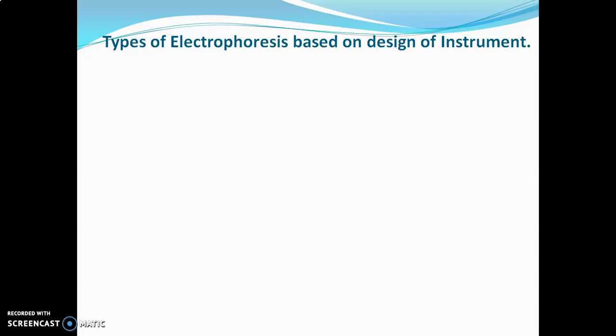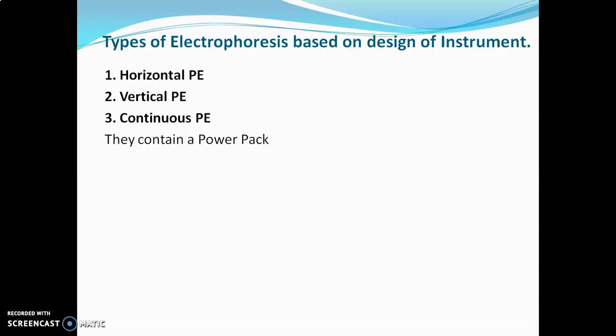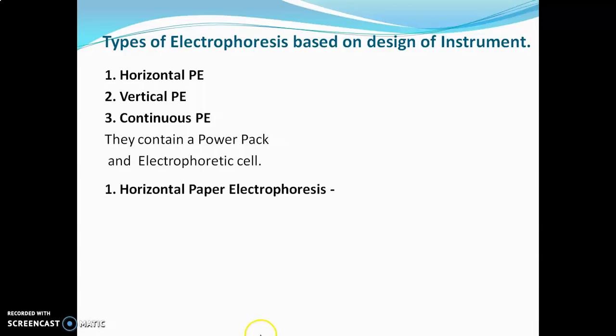Now we will look at types of electrophoresis based on the design of the instrument. There are three types: horizontal paper electrophoresis, vertical paper electrophoresis, and continuous paper electrophoresis. In all three, the instrument contains a power pack battery that provides voltage, and an electrophoretic cell that has buffer tanks, buffer solution, electrodes, and a paper holding system.